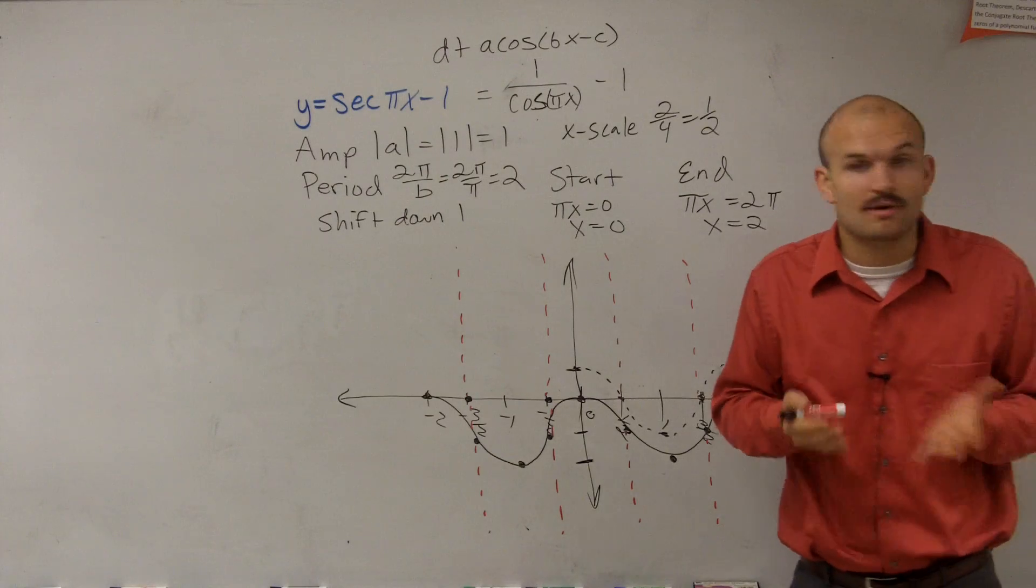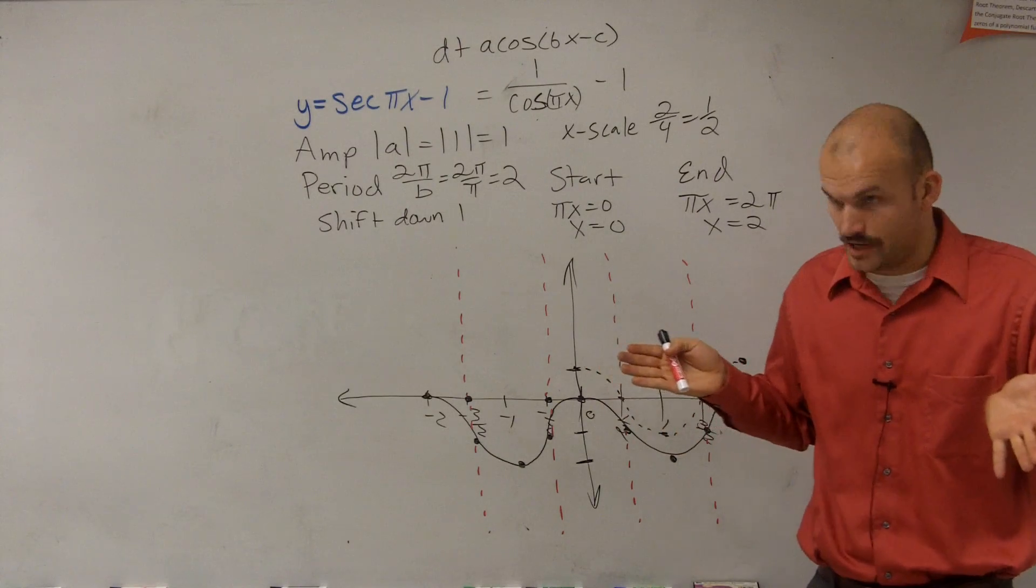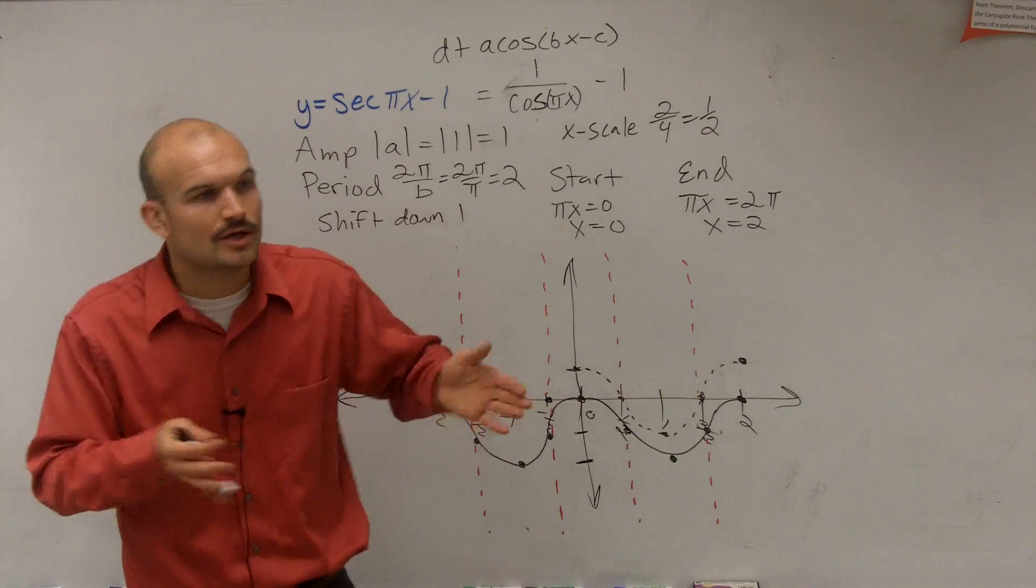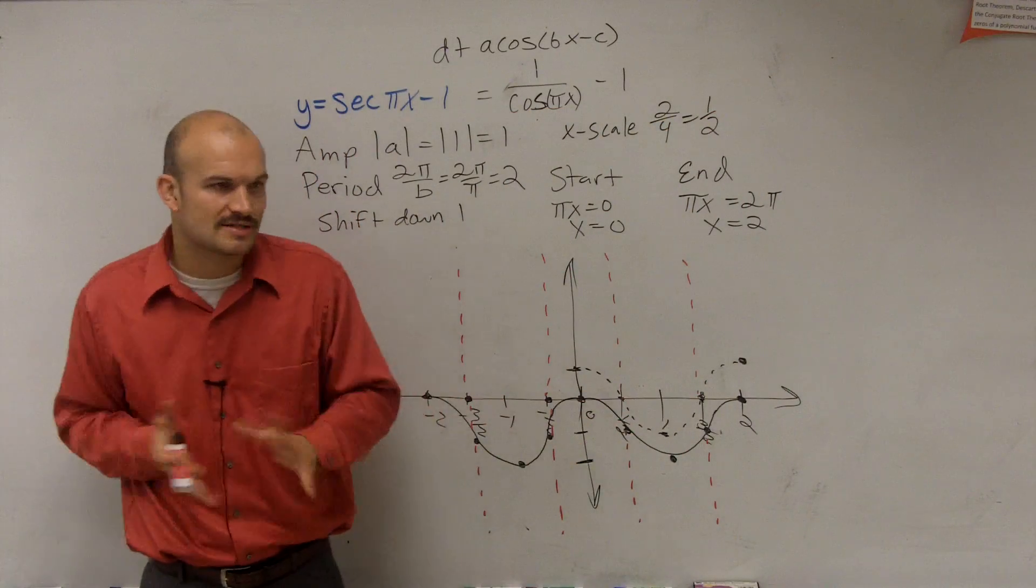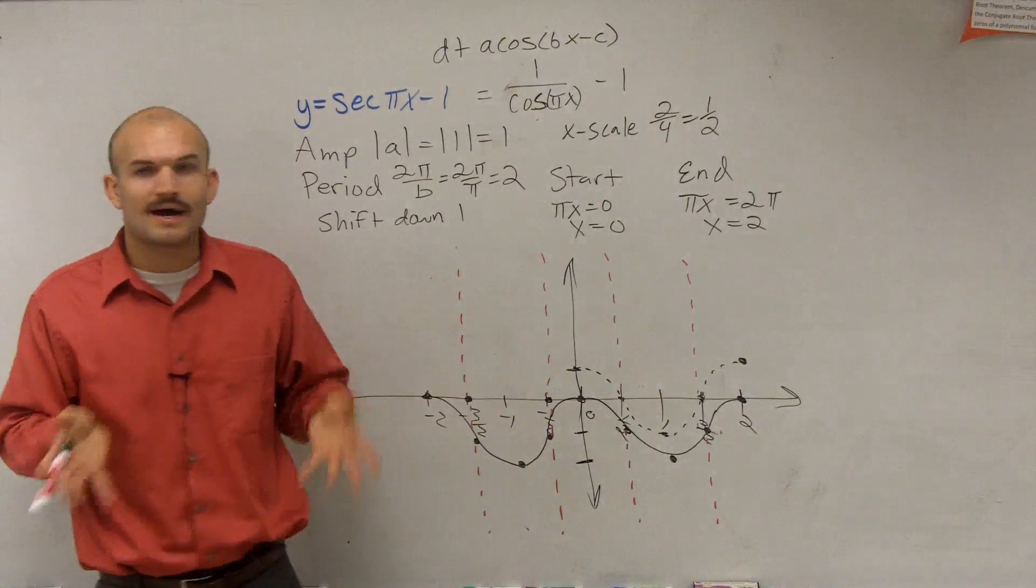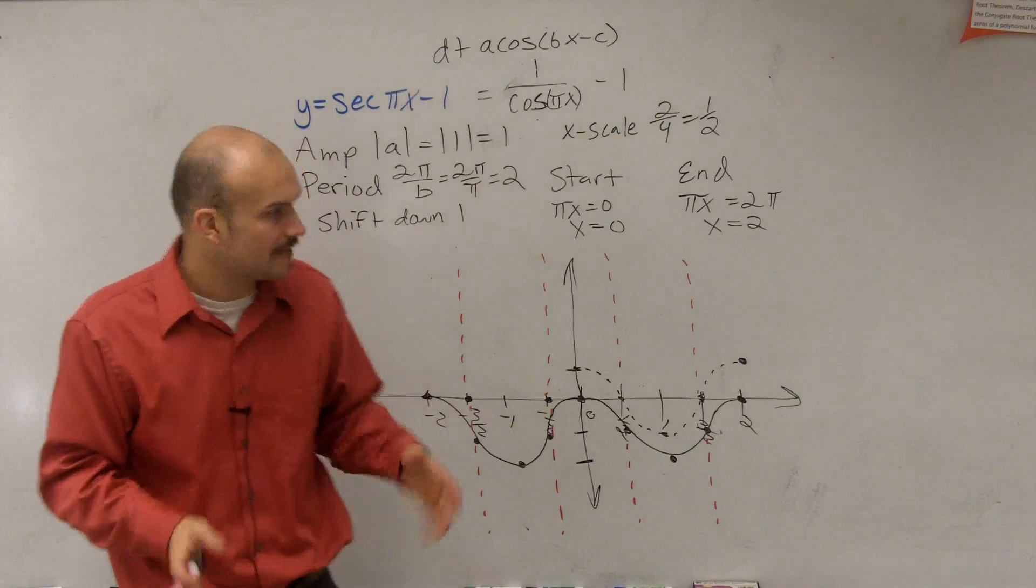Now remember, asymptotes are where your graph is going to approach, right? Your graph goes into approaching an asymptote. A lot of times will say it approaches, it never touches, never crosses. But when we're talking about vertical asymptotes, our graph is going to approach it. So how does our graph look into approaching it?